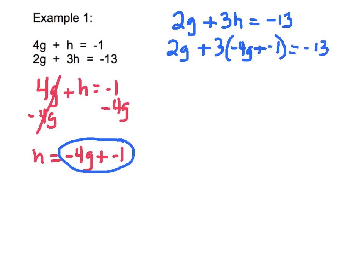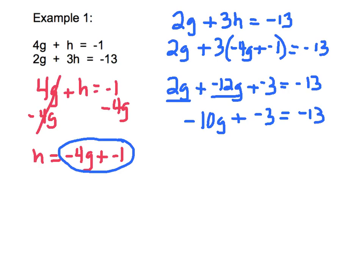So 2g will remain 2g plus 3 times that value negative 4g plus negative 1 is equal to negative 13. Using my knowledge of solving equations, I'm going to have to do the distributive property. So 2g plus negative 12g plus negative 3 is equal to negative 13. I'm going to combine like terms. Combining my g's will give me negative 10g plus negative 3 equals negative 13. To get rid of that negative 3, I can either subtract negative 3, which really means add positive 3, canceling those out, and I now have negative 10g equals negative 10. One more inverse operation, divide by negative 10, gives me g equals 1.